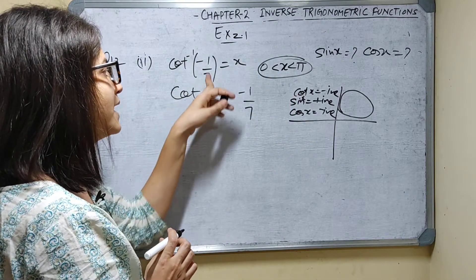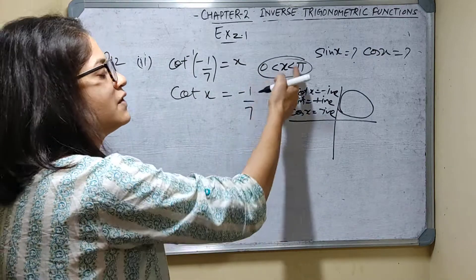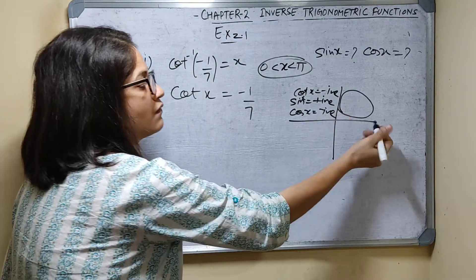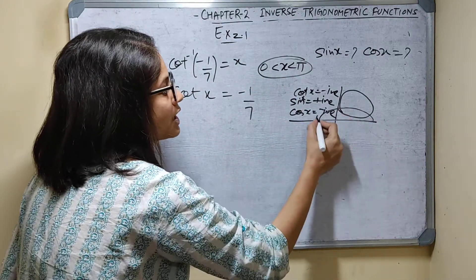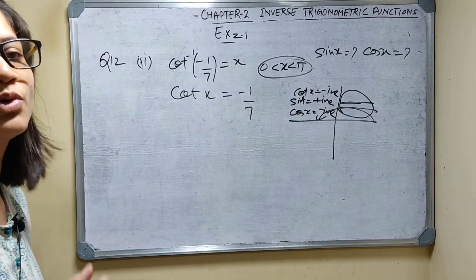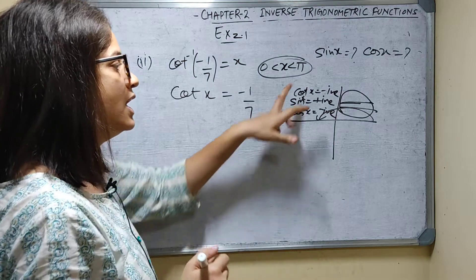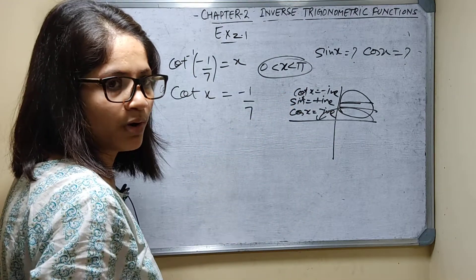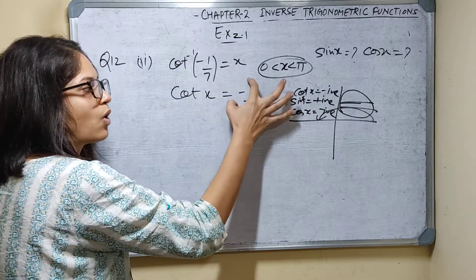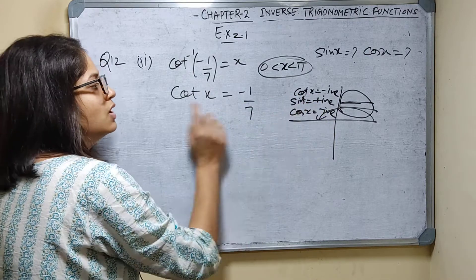I have to find cos x and sin x. Cot inverse minus 1 by 7 equals x, so x lies between 0 and pi. The value must be in the second quadrant since cot x is negative.